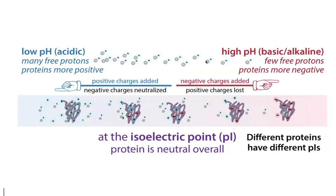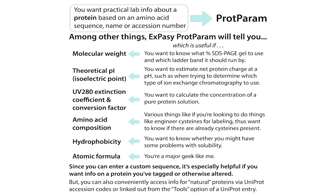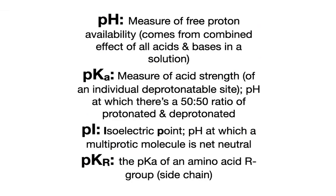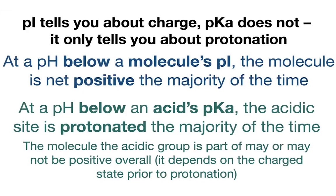We talk about the isoelectric point in the terms of proteins, and you can use software like ProtParam — ExPASy ProtParam — to actually figure out the pI or the theoretical pI. That is the point at which you're net neutral for any sort of molecule that is multi-protic — that has lots of sites that can give up a proton. Because every site that can give up a proton will have a pKa, and any molecule that has multiple of those will have a pI.